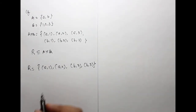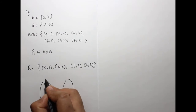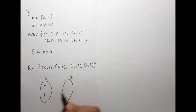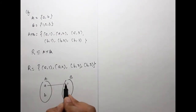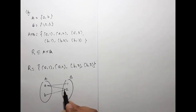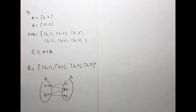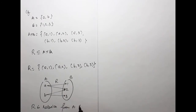Understanding by diagram: suppose this is set A and this is set B. A has elements a, b and B has elements 1, 2, 3. Then a is related to 1, a is related to 2, b is related to 2, and b is related to 3. This is the arrow diagram representing relation R from A to B.